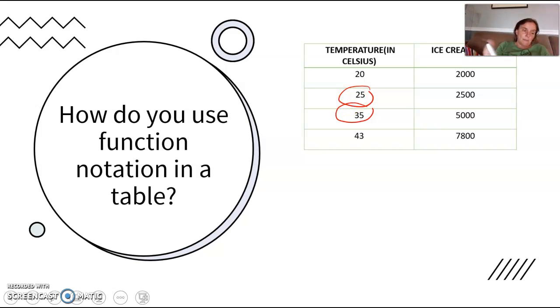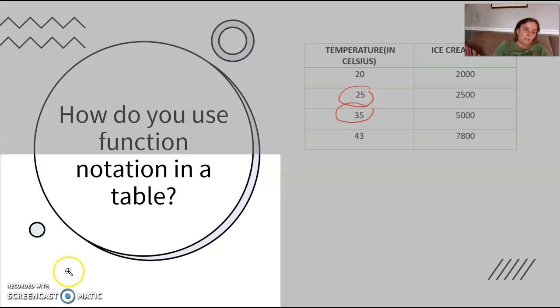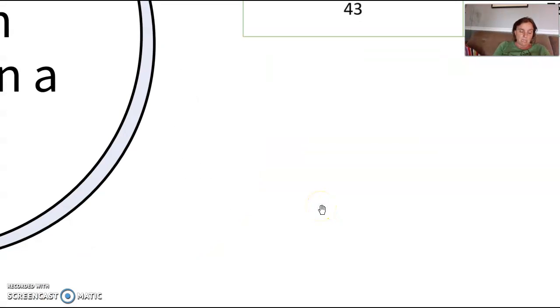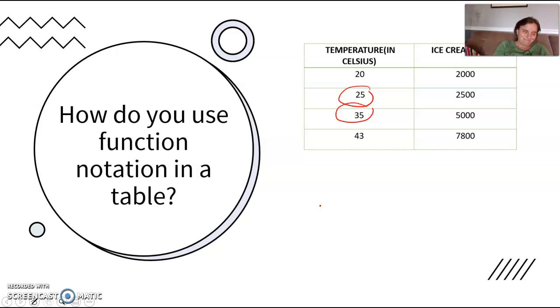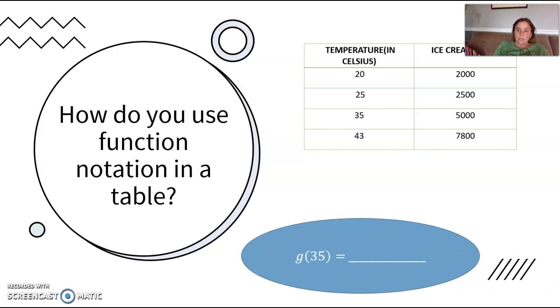So if I want to use function notation in a table, then let's say this table is called G. This function is called G. Remember, functions can have any letter associated with them. This is saying the input is 35, so what's the output of the G function?